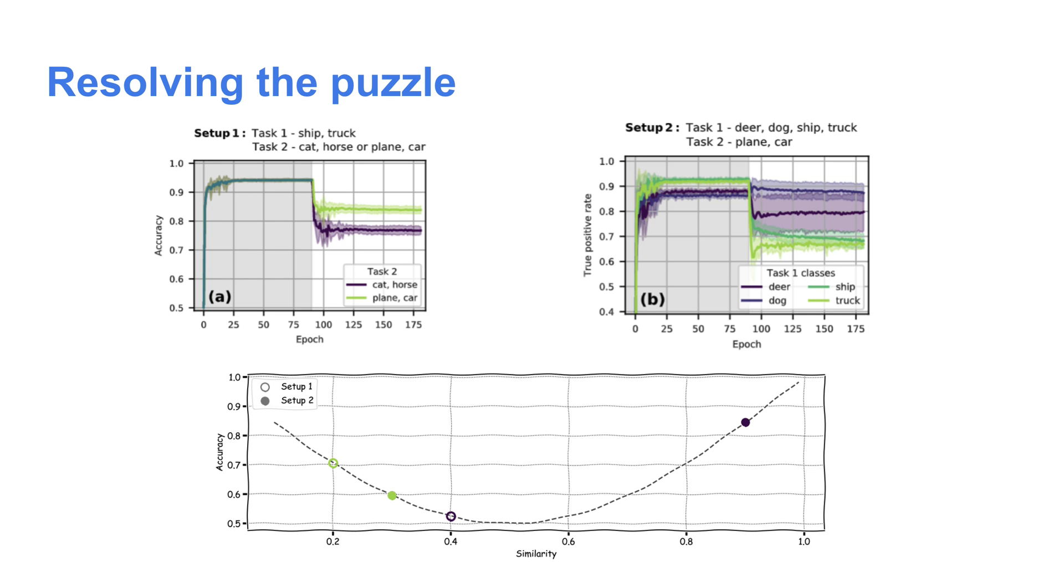Armed with this knowledge, we can go back to our initial puzzle and explain it using what we've just learned. At the top, I show the two graphs from earlier. At the bottom, I show our cartoon explanation of what's going on. Let me emphasize that this is just a cartoon. In setup one, when we initially only trained the model on vehicles, there was no pressure to represent animals and vehicles differently.